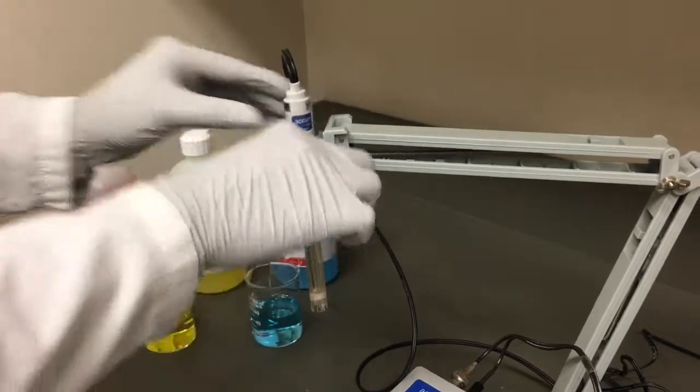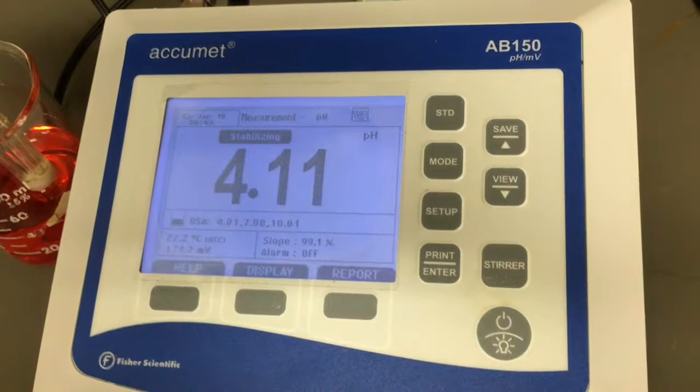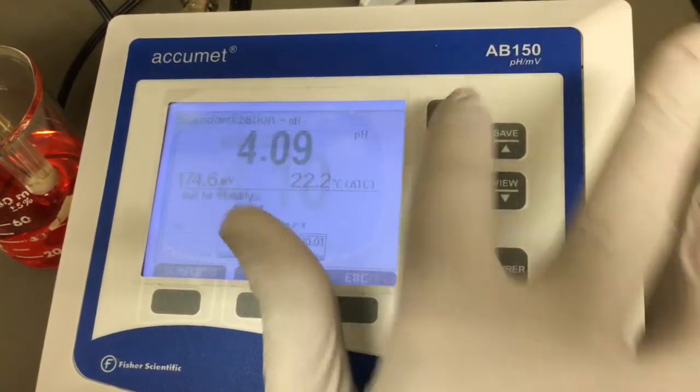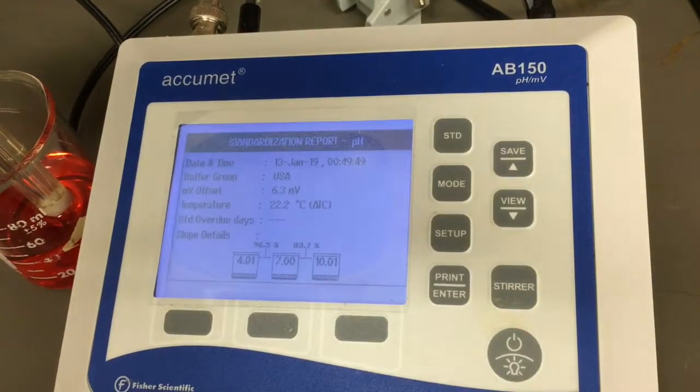Suspend the probe in the holder and submerge it in the first buffer ensuring you do not hit the probe and damage it. Press the standard button and await a stable reading. Confirm the calibration value by pressing the standard button again.